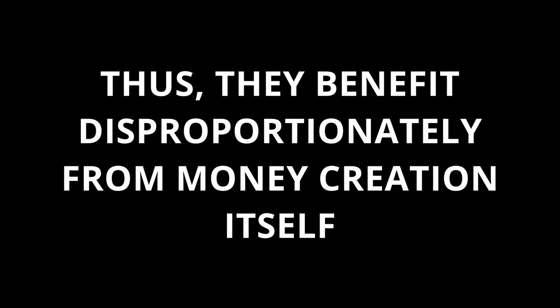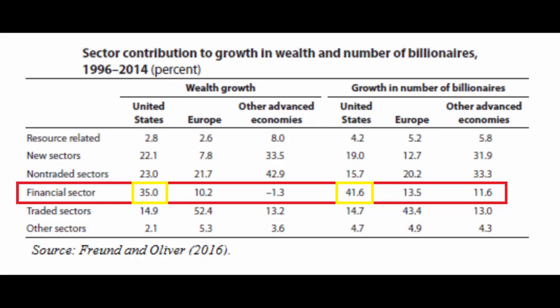Thus, the economics of Cantillon effects tells us that financial institutions benefit disproportionately from money creation itself, since they can purchase more goods, services, and assets for still relatively low prices. This conclusion is backed by numerous empirical illustrations. For instance, the financial sector contributed massively to the growth of billionaires' wealth, as we can see here.